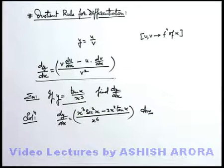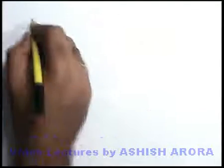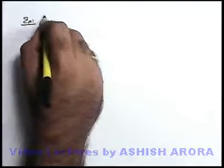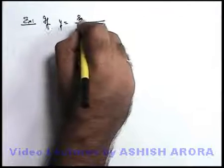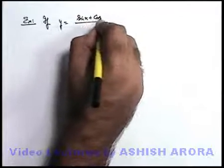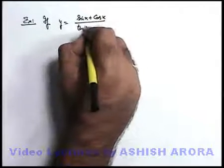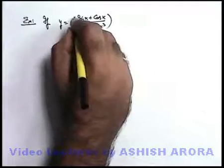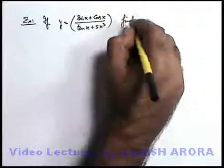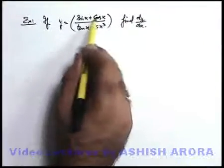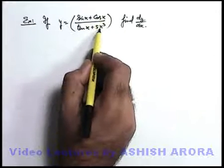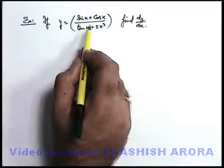Let's see one more example based on the quotient rule. Say we are given y is equal to sin x plus cos x, upon tan x plus 5x cube, and we are required to find d-y by d-x. In this situation, sin x plus cos x and tan x plus 5x cube are given in the form u upon v.